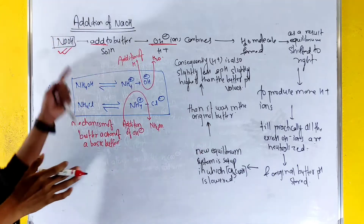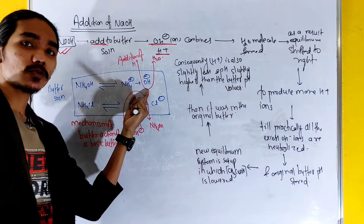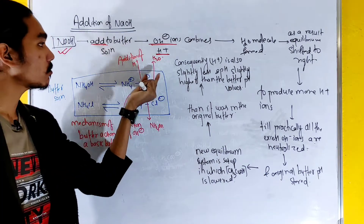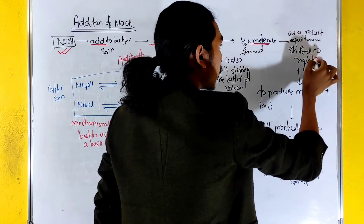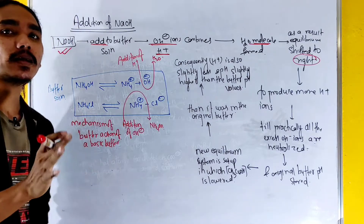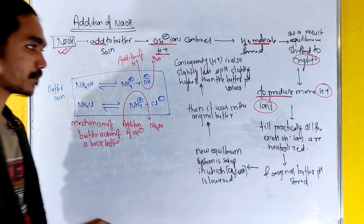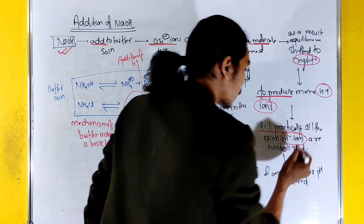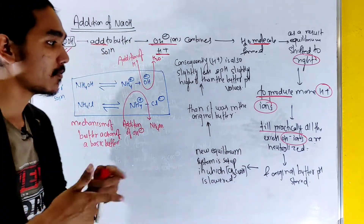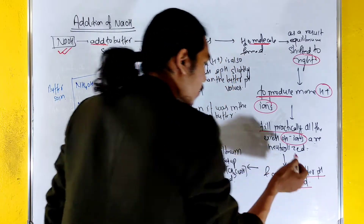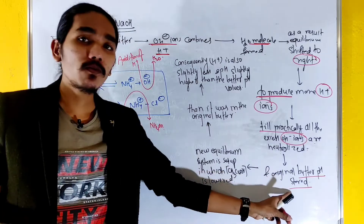The NaOH is neutralized by the acetic acid present in the buffer. The equilibrium shifts to produce H+ ions until practically all the OH- ions are neutralized, and the original buffer pH is restored. The new equilibrium system is established.